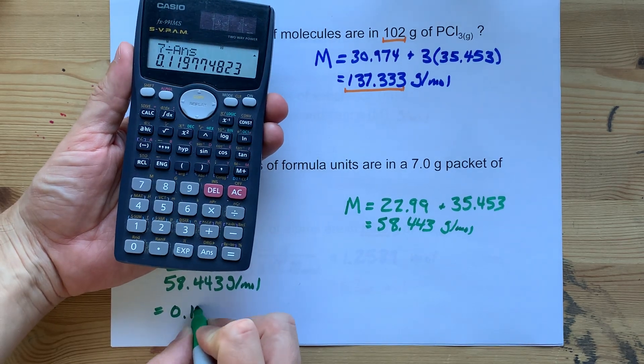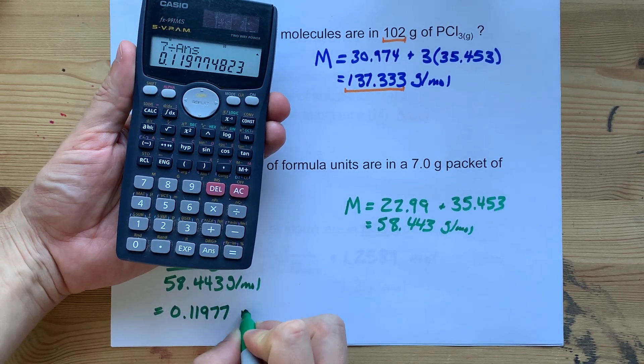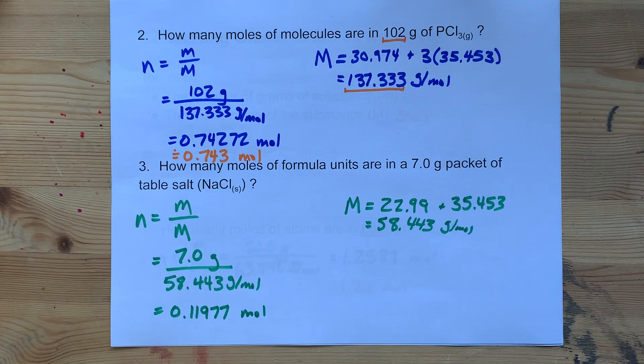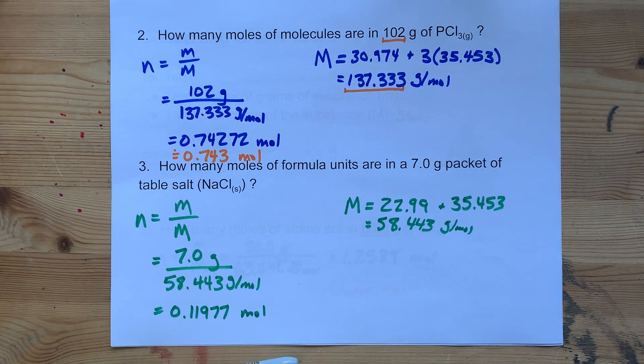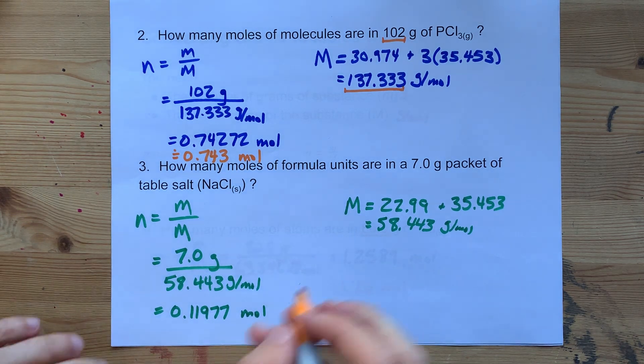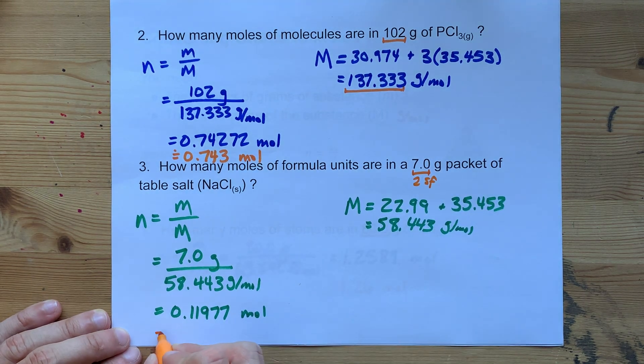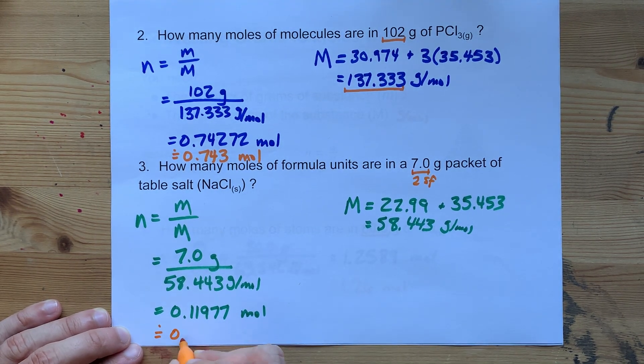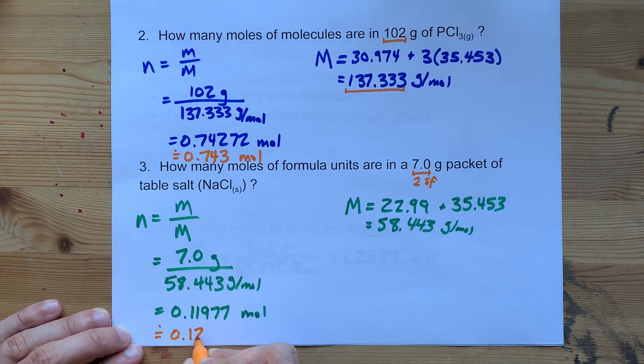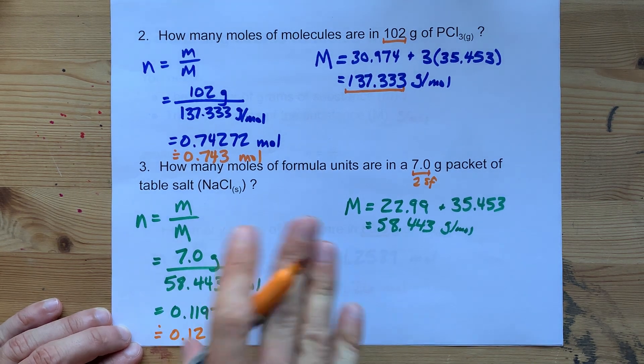So that's 0.11977 moles. Now you know what I'm about to do here too. It's significant figures. There's only two significant figures here, so this needs to be two significant figures. 0.12 moles. There you go.